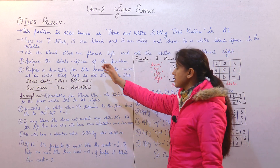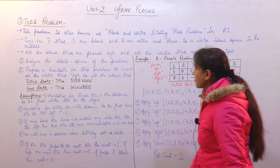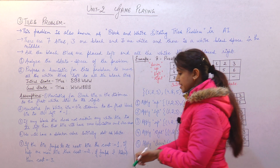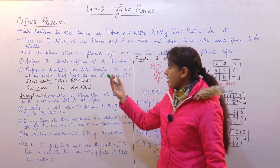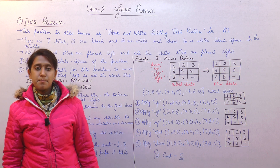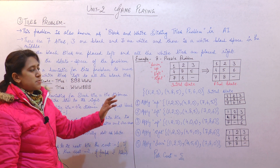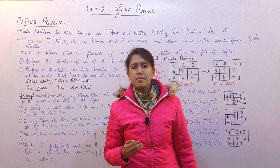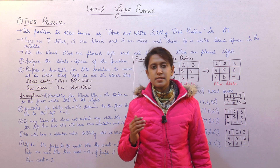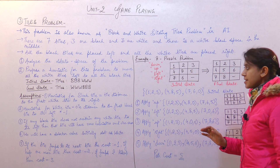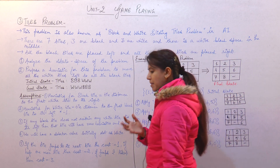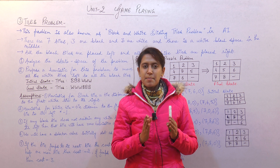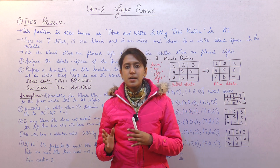Let's see what the tiles problem is. This problem is also known as the black and white sliding tiles problem in artificial intelligence. We are given a certain number of black tiles and the same number of white tiles, and we have to arrange them so that one color is on the left side and the other color is on the right side.